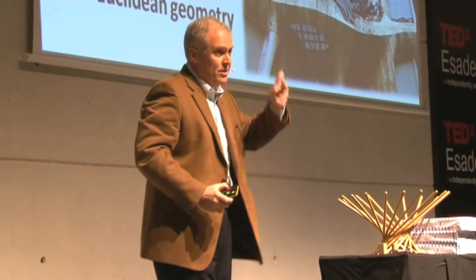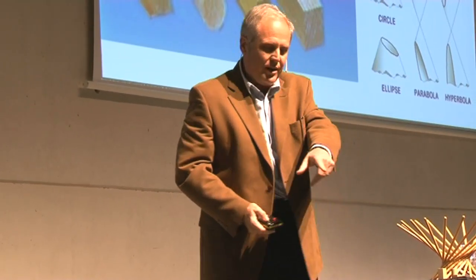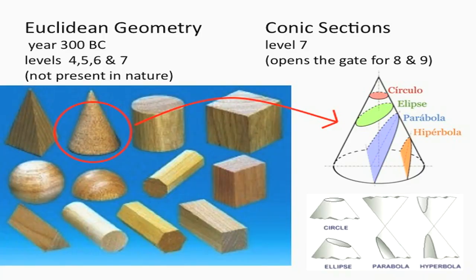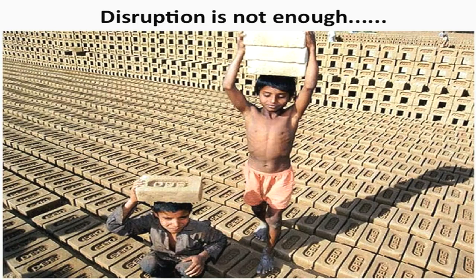And this is what he did. I have a picture to show it better — you use the cone and it has four different sections: the circle, the hyperbola, the ellipse, and the parabola. But importantly, here we have another disruptor: Alvar Aalto, another architect, who said no more heavy furniture. And another example is Steve Wozniak, who said no more computers only for corporations. But disruptors are not enough. You need something else in order to make great inventions affordable.